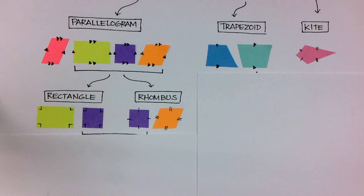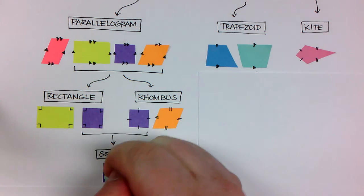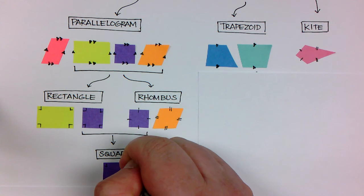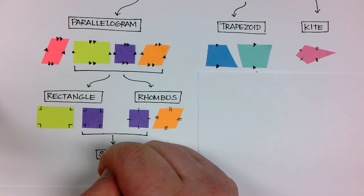And furthermore, I can break those down and say that there could be a specific shape called a square, which is where all four angles are right angles and all four sides are congruent as well.